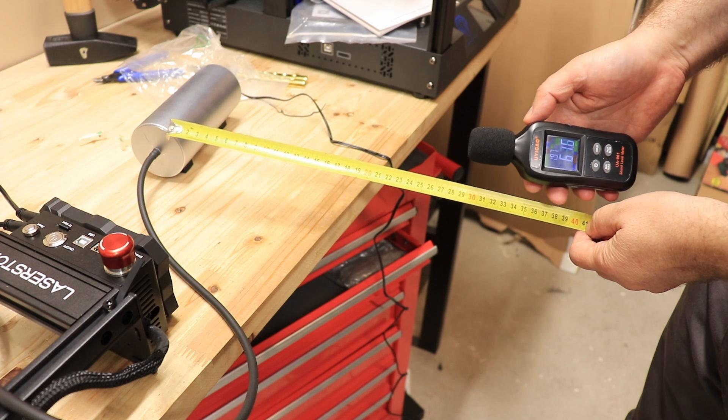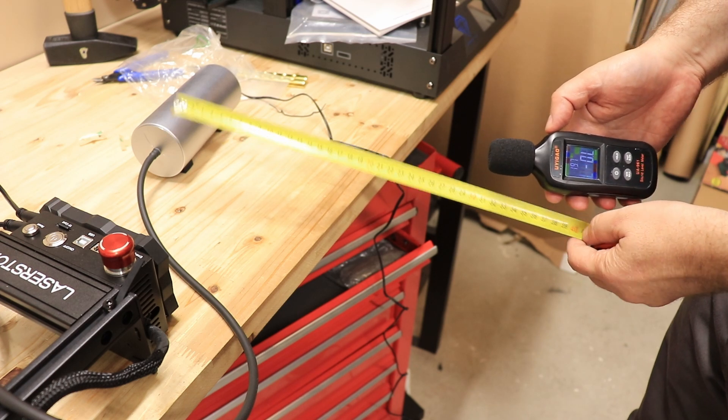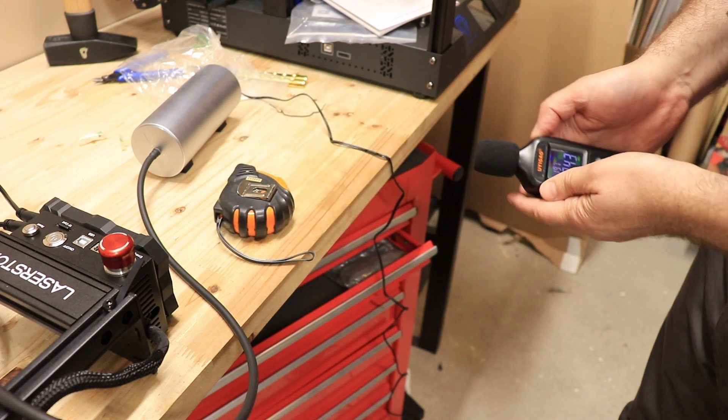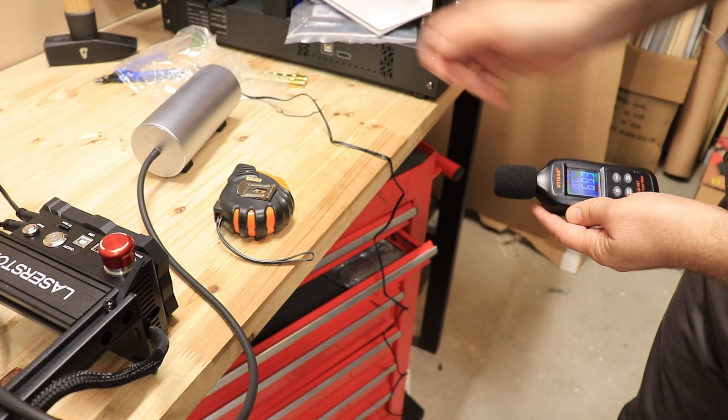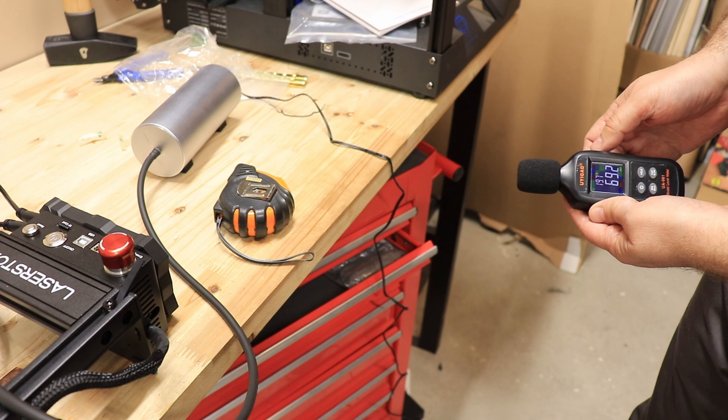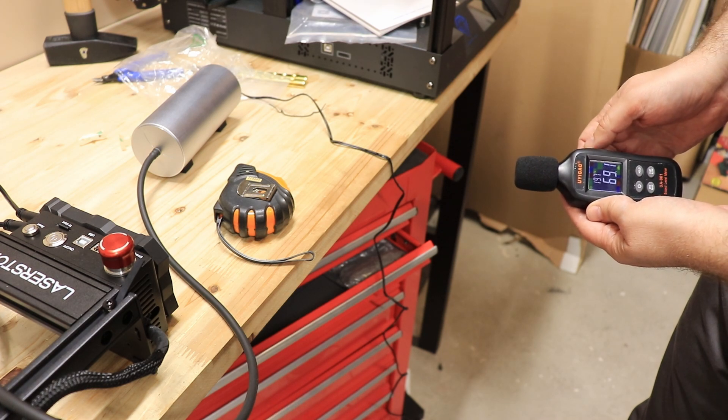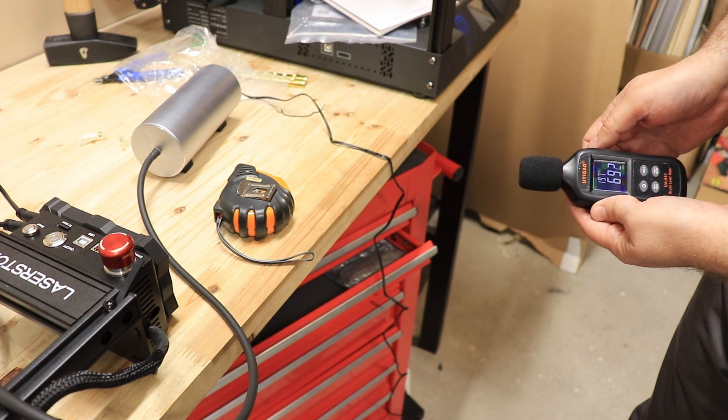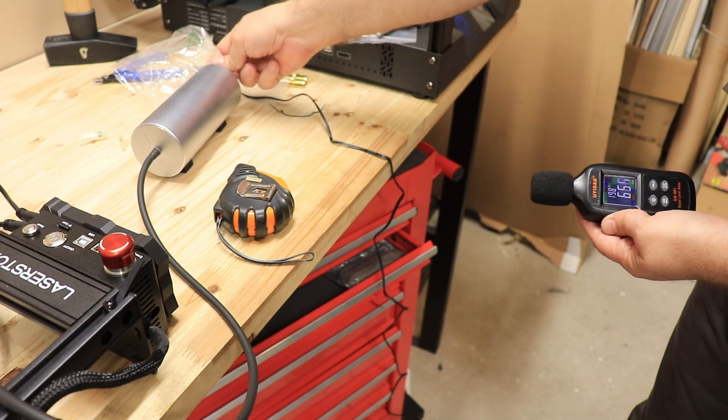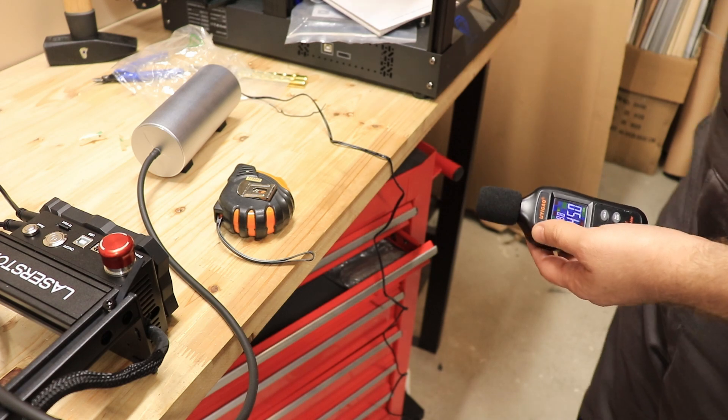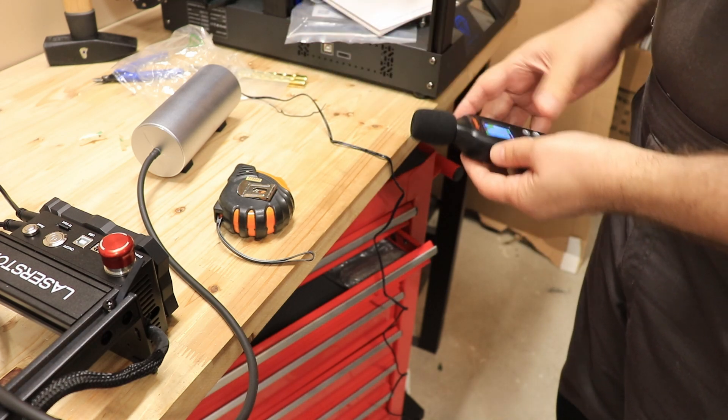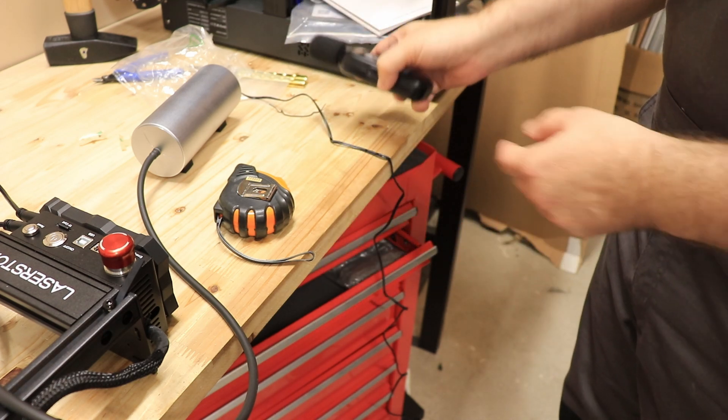And now let's measure the noise from 30 cm distance. Approximately 68 dB but for the feeling it is not too loud compared to the vacuum cleaner for example or a real compressor.